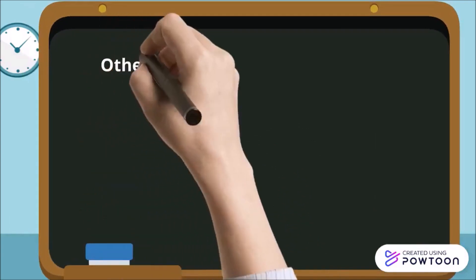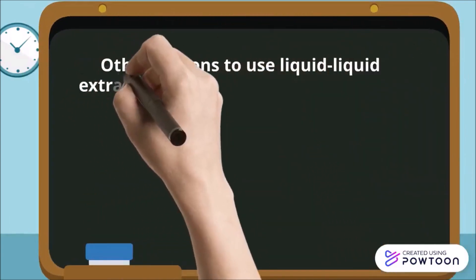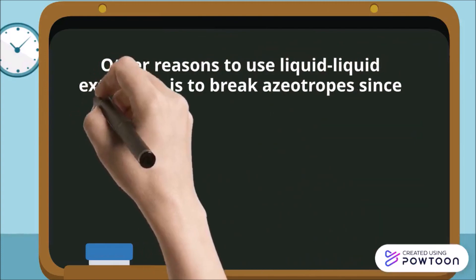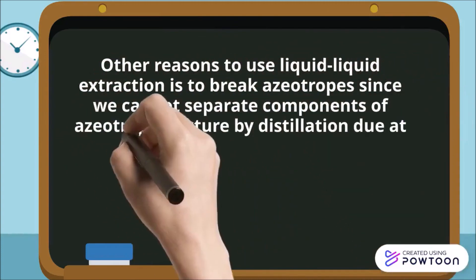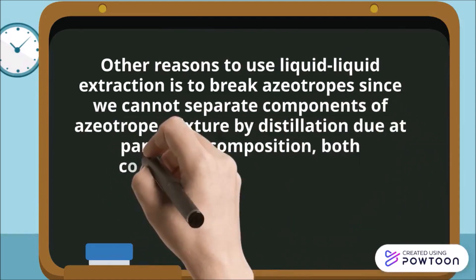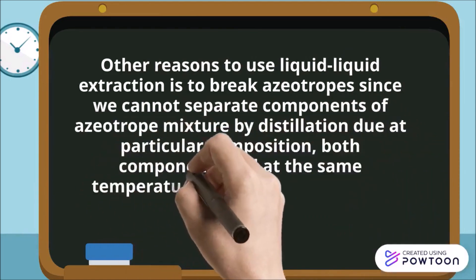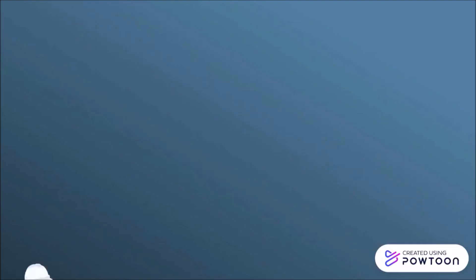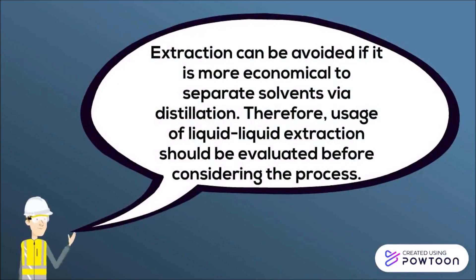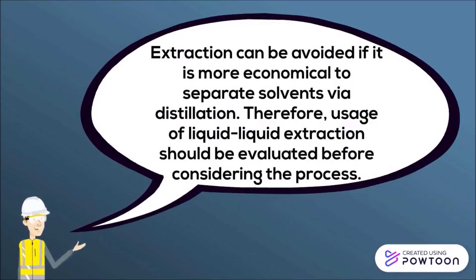Another reason to use liquid-liquid extraction is to break azeotropes, since we cannot separate components of an azeotrope by distillation at a particular composition where both components boil at the same temperature. An example of an azeotrope is water-ethanol. However, extraction can be avoided if it is more economical to separate solvents via distillation. Therefore, the use of liquid-liquid extraction should be evaluated before committing to the process.